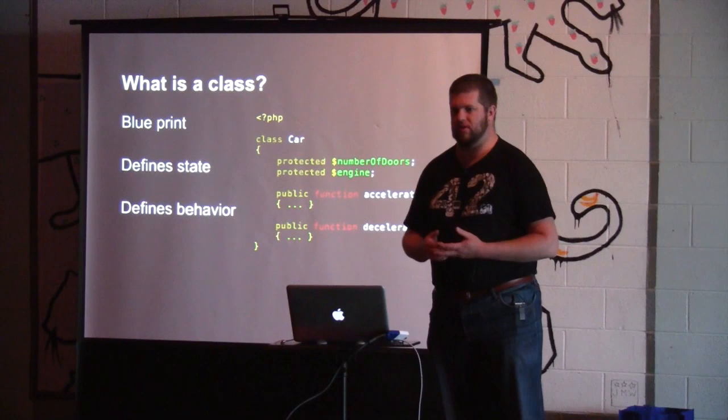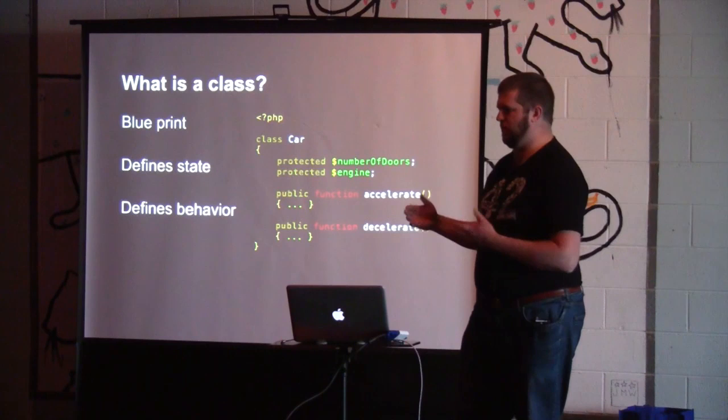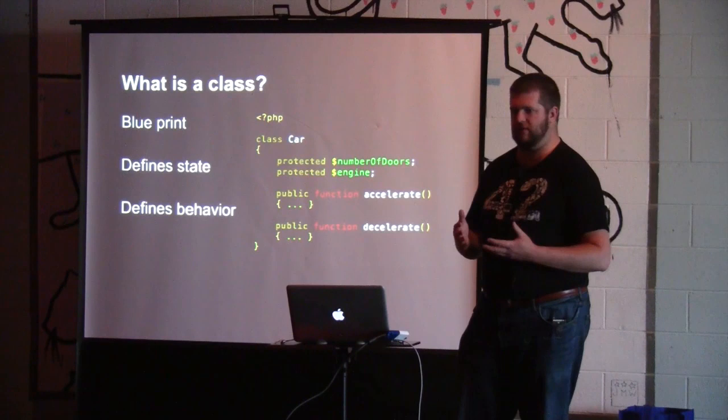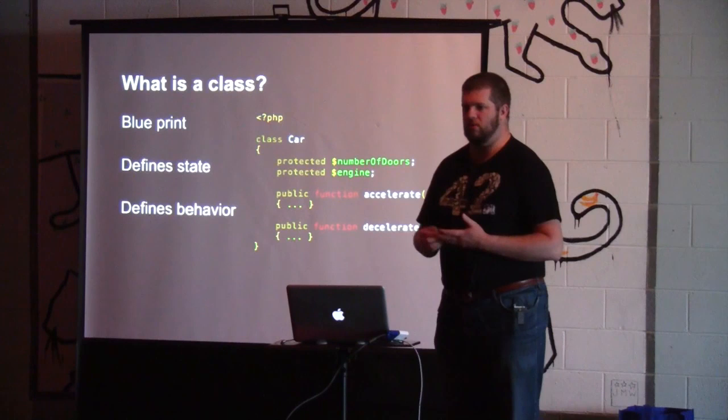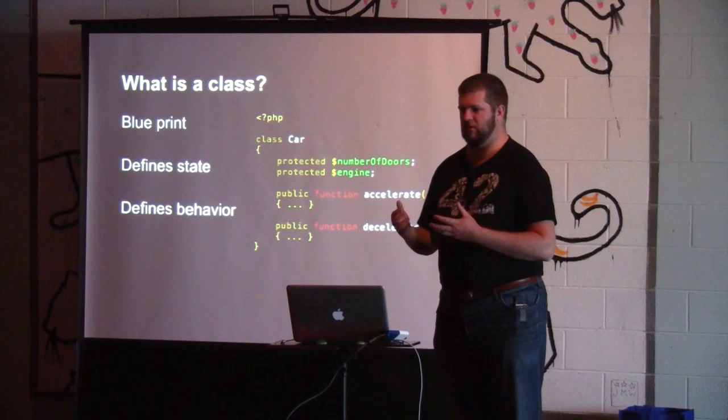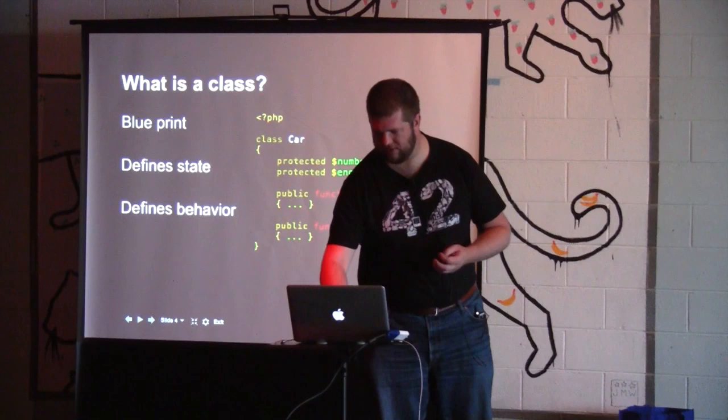There are obviously many more things I could add, but those are some state parts of my class. I've also got behavior — things like accelerate or decelerate. With object-oriented programming, the state and the behavior are tied together. We know that if we put those all in a class it's going to work because the class combines those methods and those properties all together.